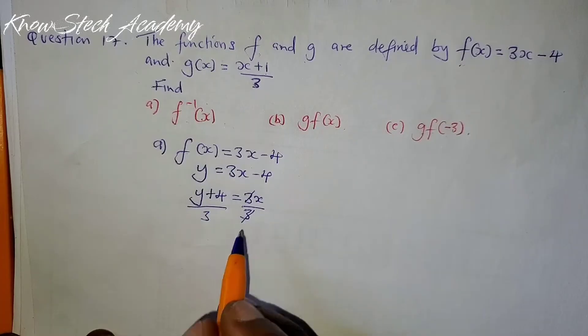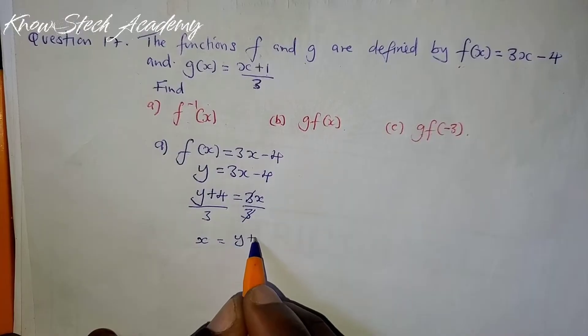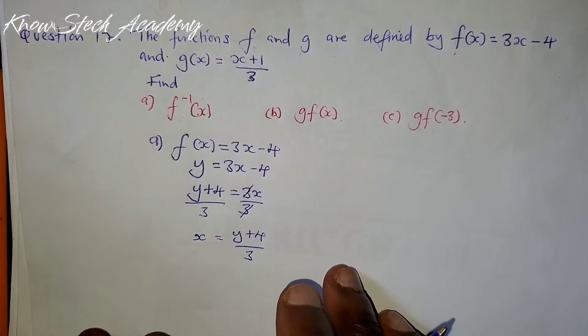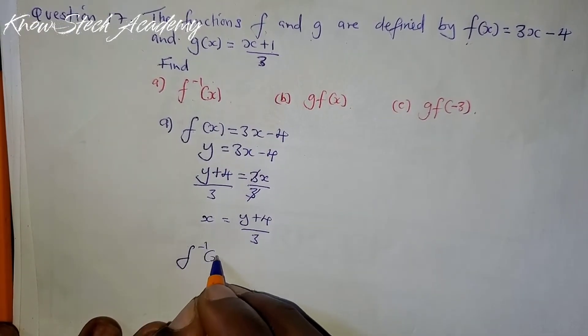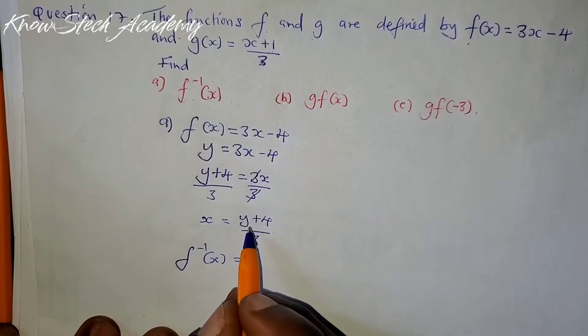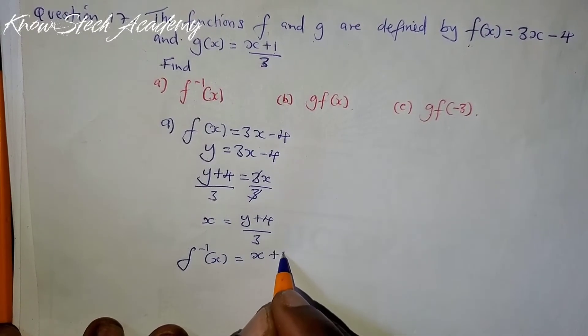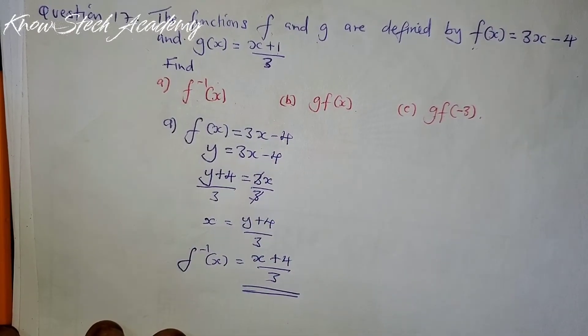Therefore, now x is independent, so you can write x = (y + 4)/3, like this. Then finally, you attach the inverse function. You can just say f inverse of x equals, now where there is y here, replace with x. So x + 4 over 3, then this is the answer, as simple as this.